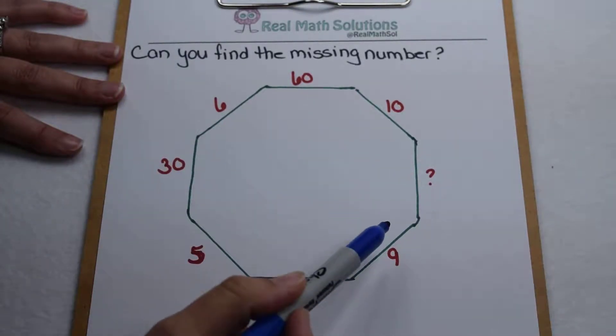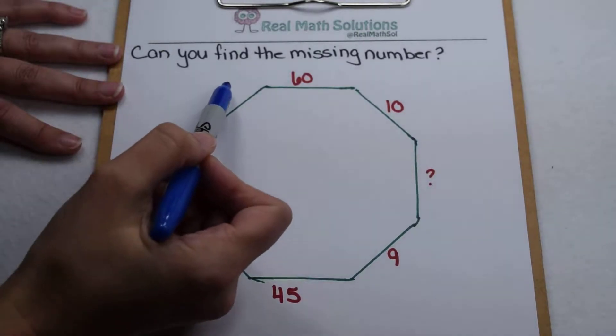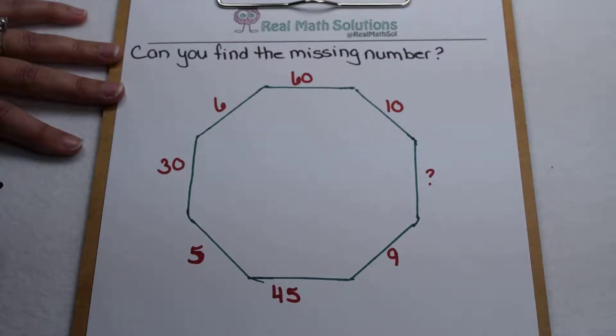Well, if we start counting sequentially, there isn't a pattern between the values, because some increase, some decrease, and it's never by the same amount. So let's start looking in combinations.